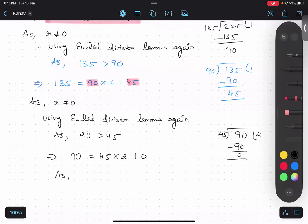So we'll write as remainder equals to 0. Therefore HCF equals to b. So what is b in this case? What is b in this case? HCF is 45. Understood?